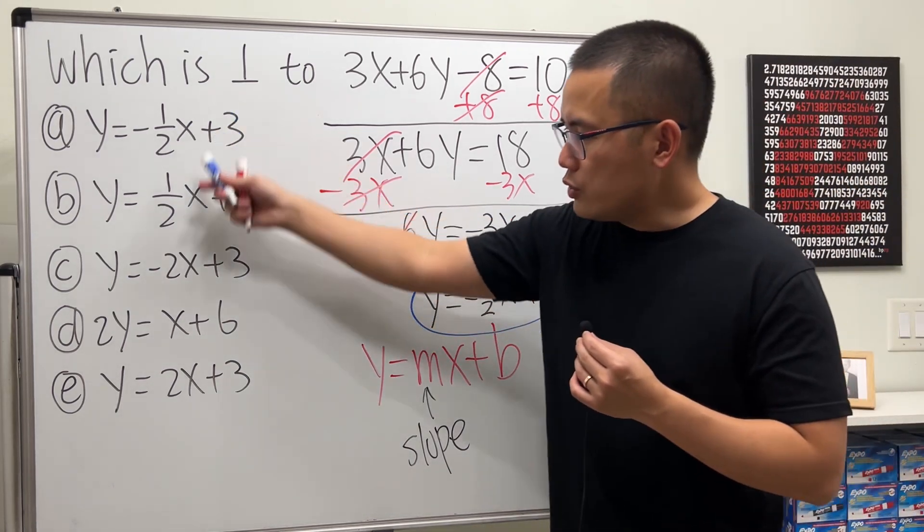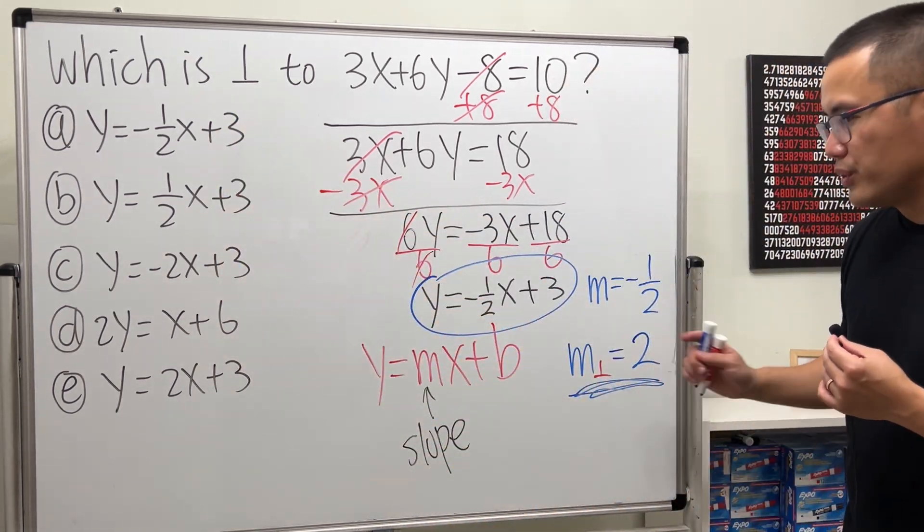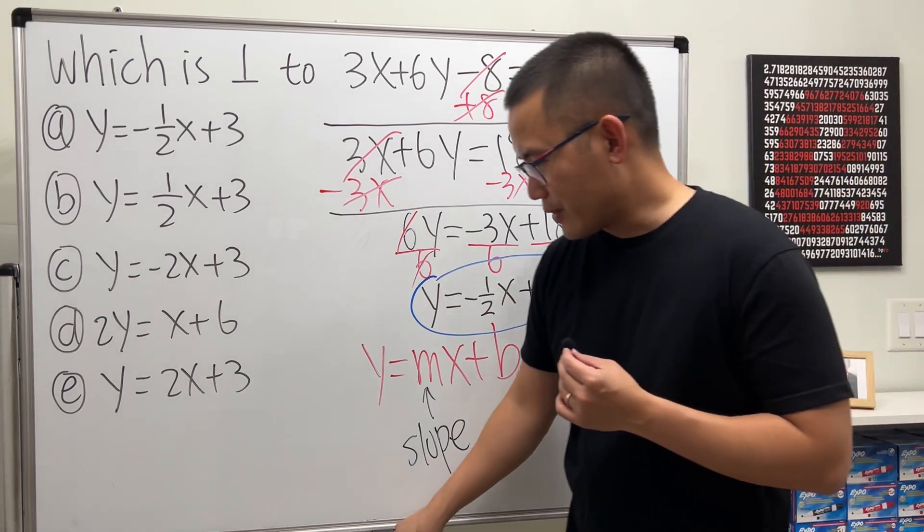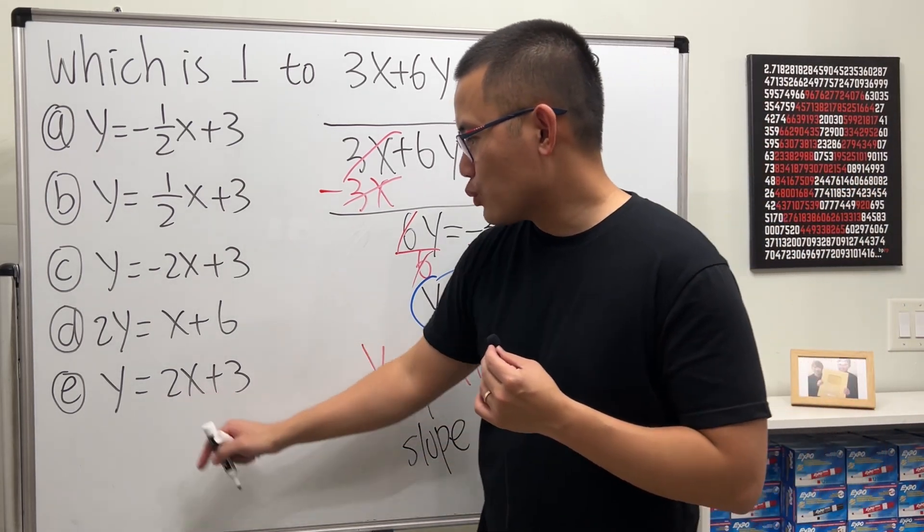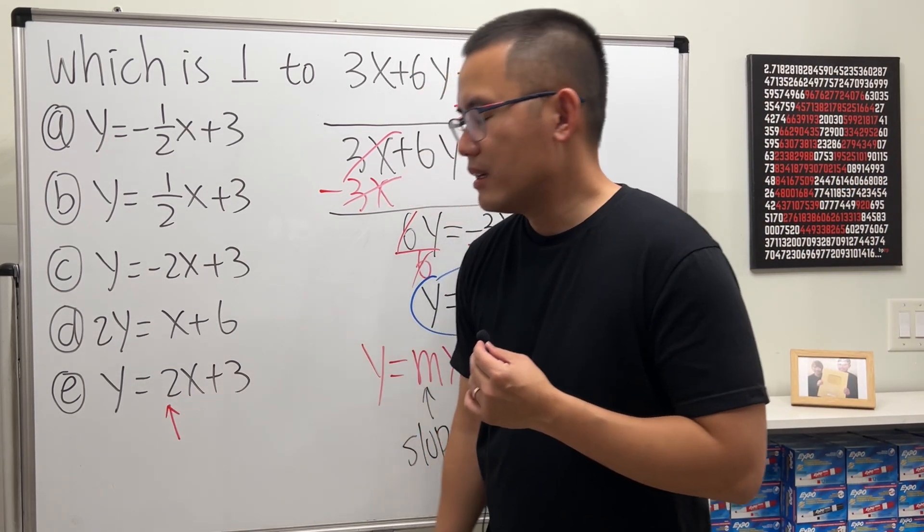So, let's see which of this line has the slope 2. And the answer for that is the last one, because this right here is slope 2.